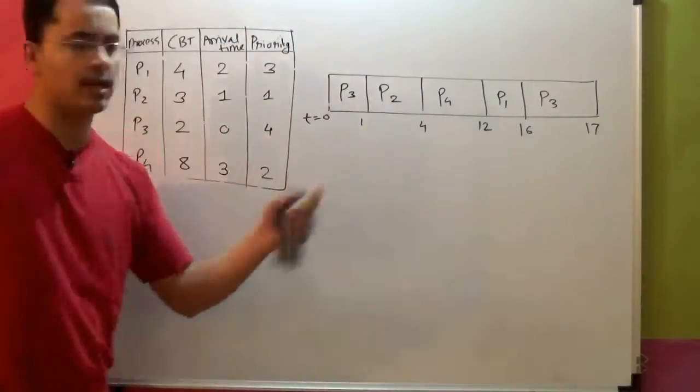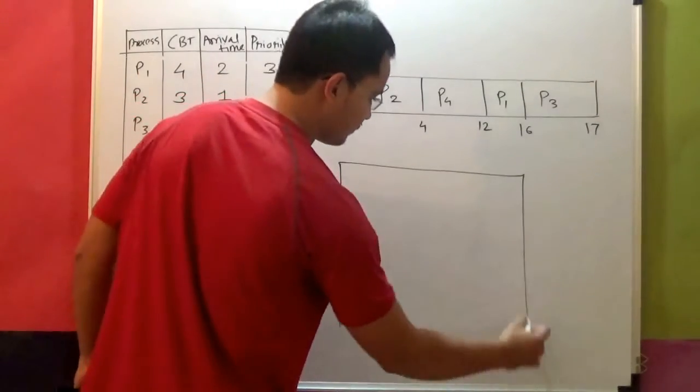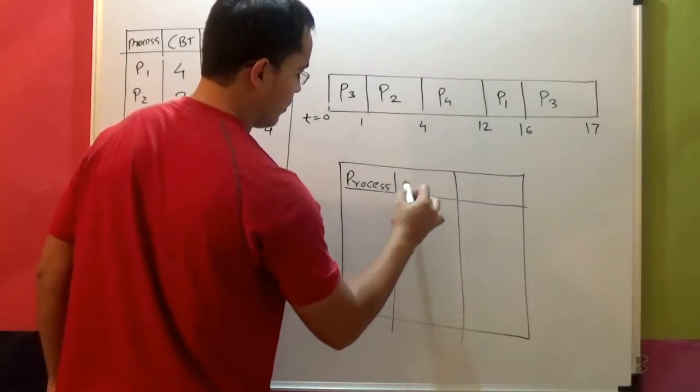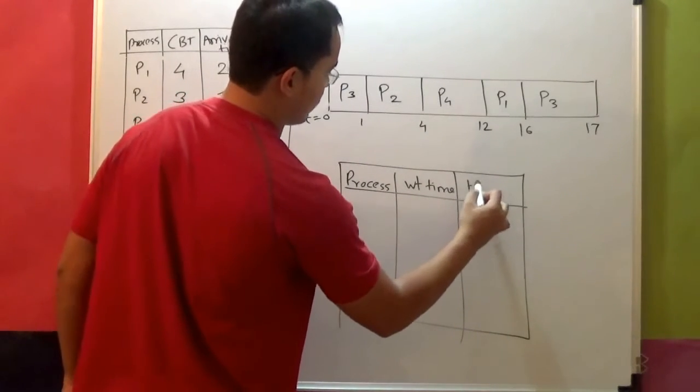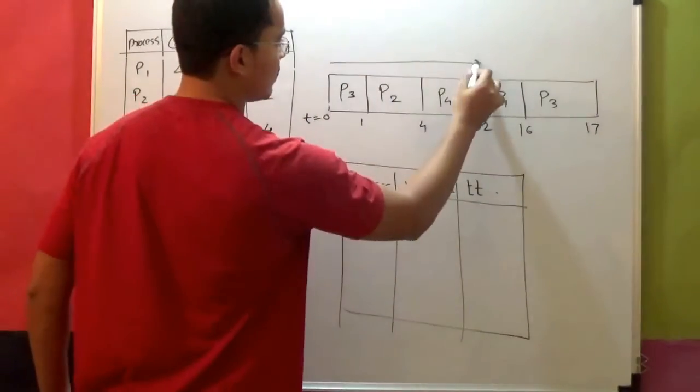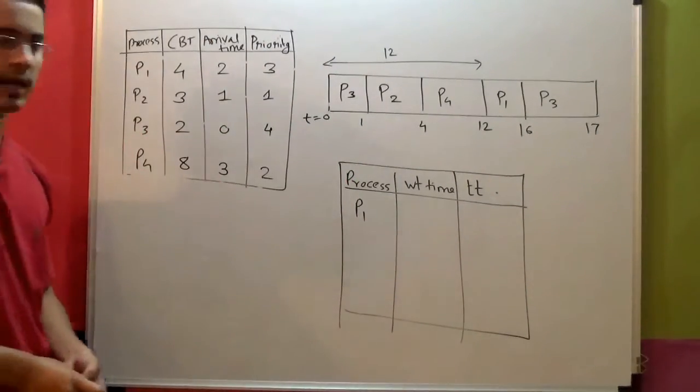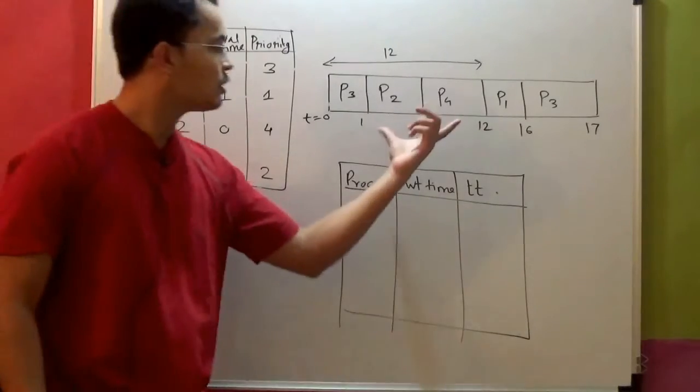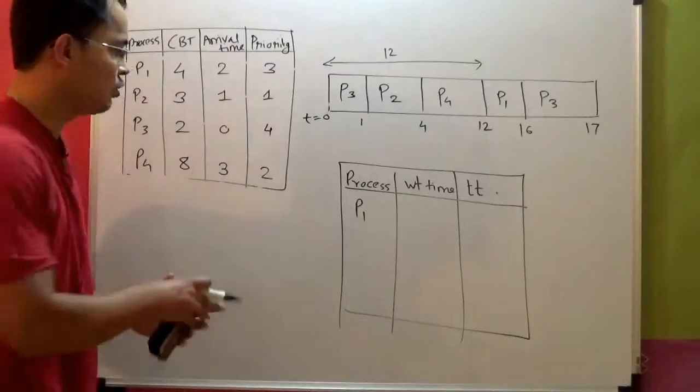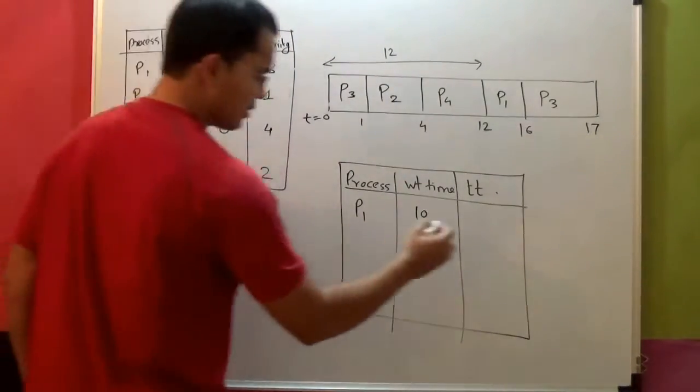Now let's calculate the waiting time and turnaround time. For process P1, what is P1's waiting time? It looks like P1's waiting time is 12, but P1 arrived at what time? Arrival times are given now, so we have to subtract. 12 minus P1 arrived at 2, time equal to 2, so 12 minus 2, that is waiting time is 10. What about turnaround time? 10 plus CPU burst time is 4, so that is 14.